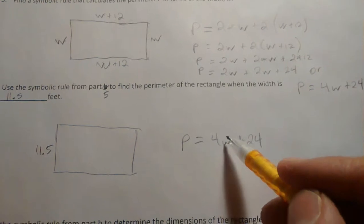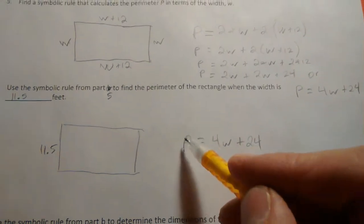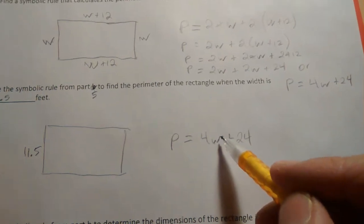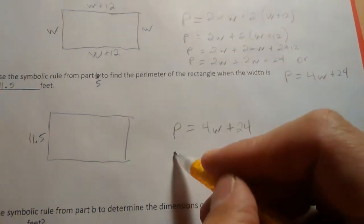Not P. P represents the perimeter. W represents the width, so now we have the perimeter in terms of W only, and we can insert 11.5 there.